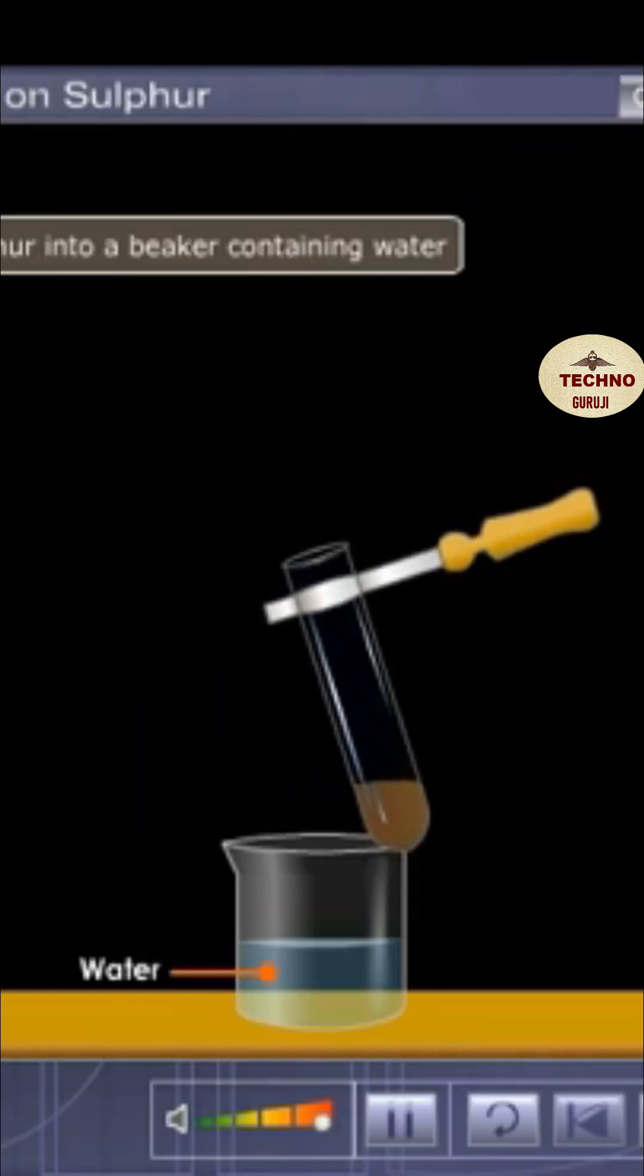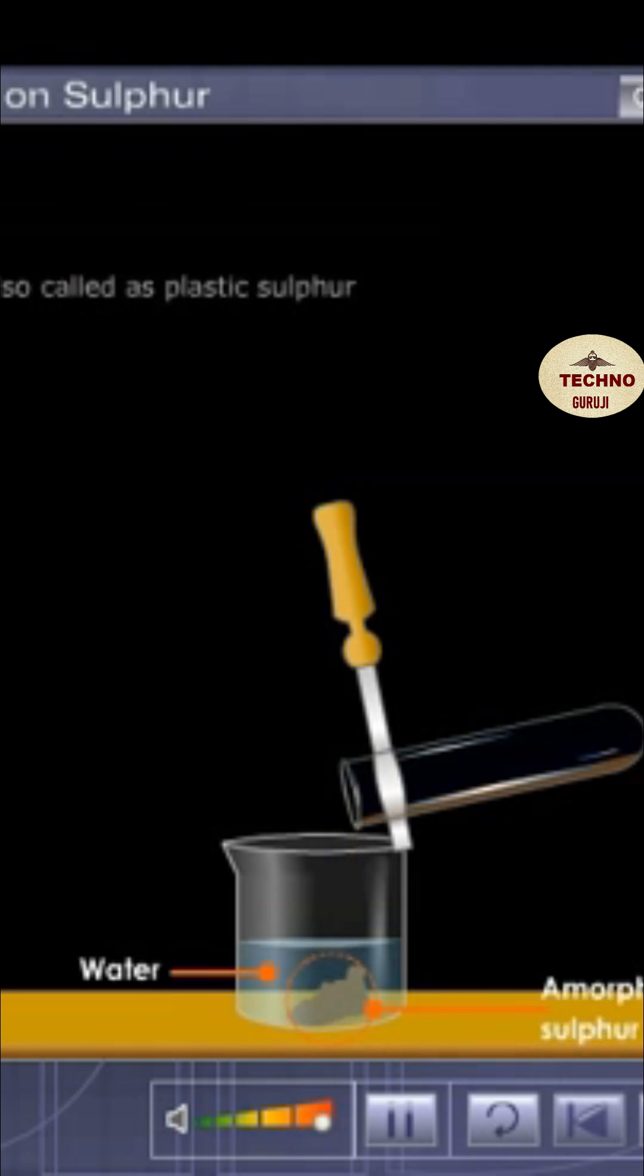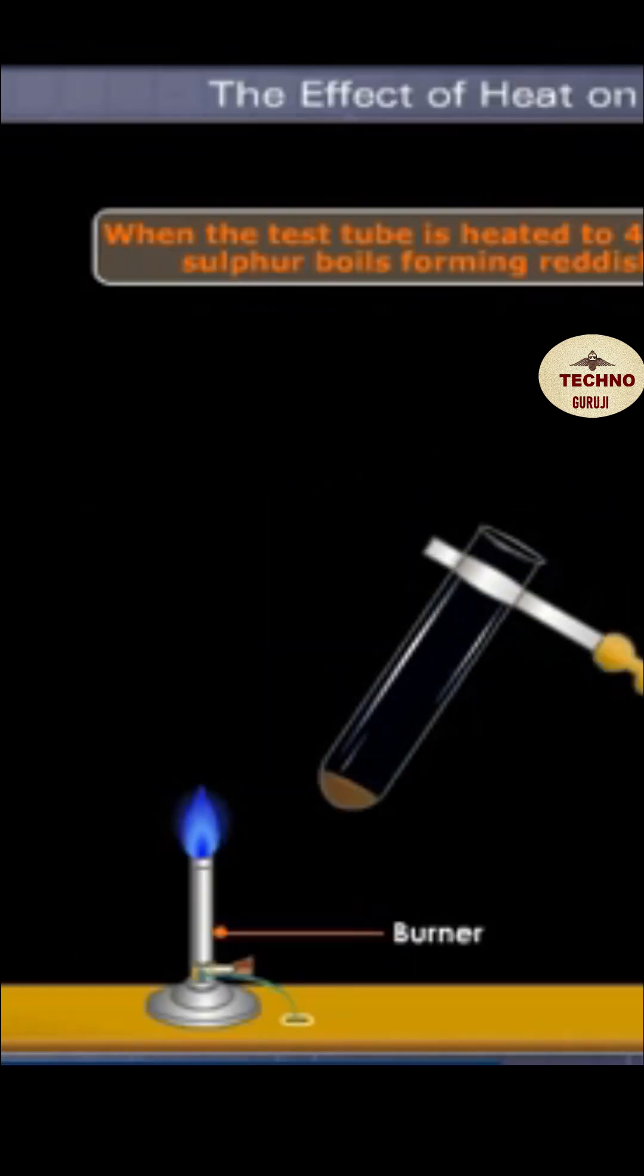Pour some of this viscous sulfur into a beaker containing water. This forms an amorphous allotrope of sulfur, often called plastic sulfur. It looks like well-chewed bubblegum.